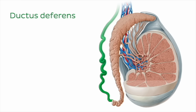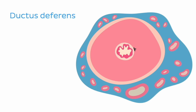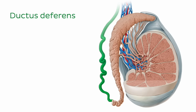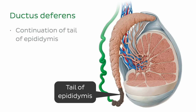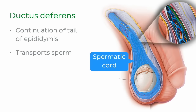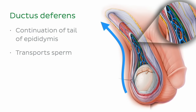The ductus deferens, also known as the vas deferens, is a long tube with a thick muscular wall and relatively thin lumen. The ductus deferens is a continuation of the tail of the epididymis. From here it transports sperm through the inguinal canal, within the spermatic cord, and into the pelvic cavity.